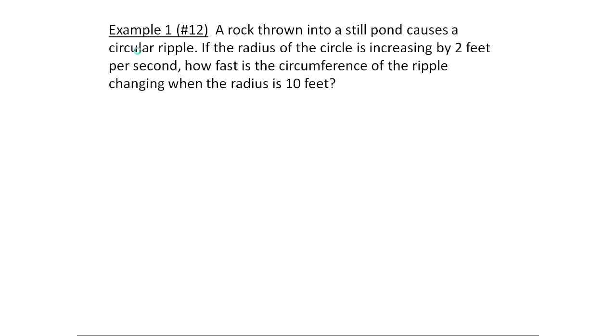Looking at this first example which came out of your textbook, we're told that a rock's thrown into a still pond and it causes circular ripple. The radius is increasing by two feet per second. Now one of the big things about these problems is figuring out what information you have, and so I'm going to write that down first.